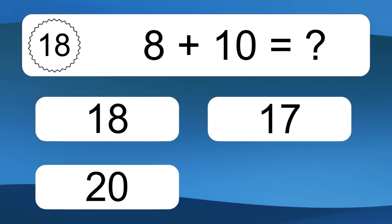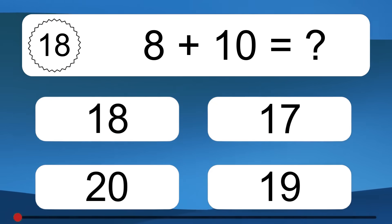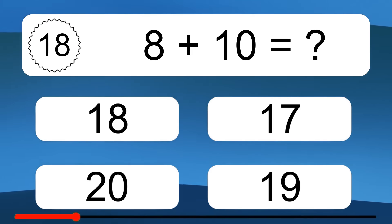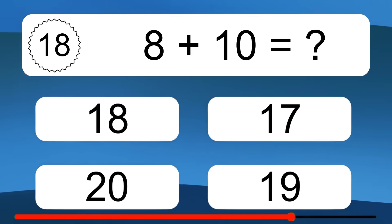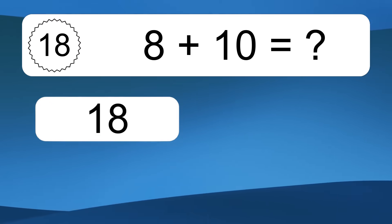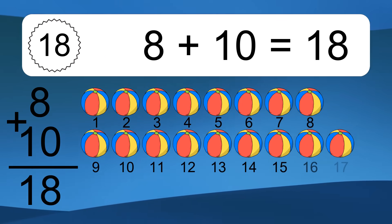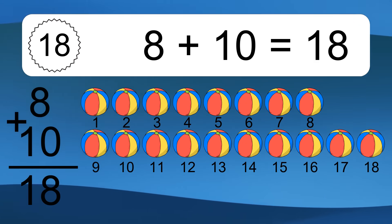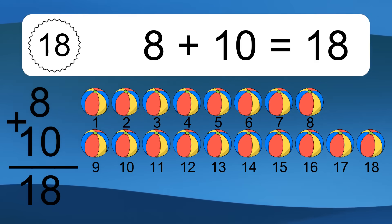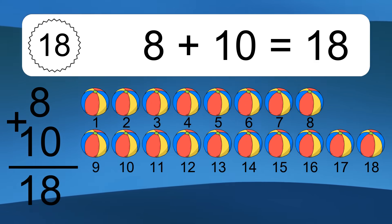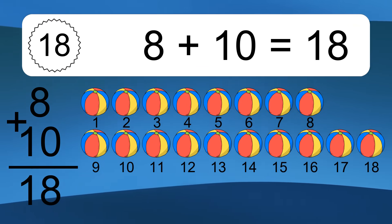8 plus 10 equals what? 8 plus 10 equals 18. Let's count it: 1, 2, 3, 4, 5, 6, 7, 8, 9, 10, 11, 12, 13, 14, 15, 16, 17, 18.